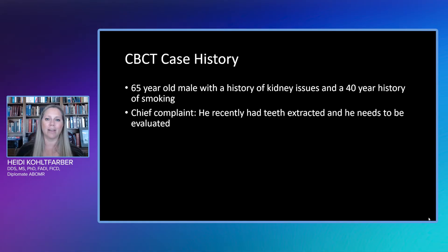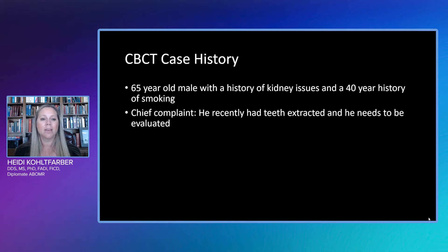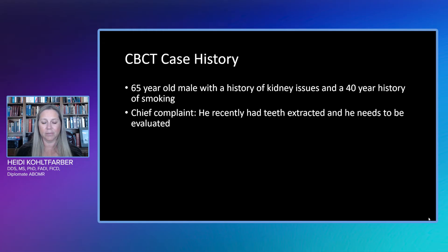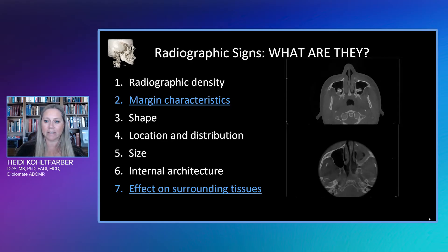Let's jump right in. This was the case history sent to us when the CBCT was submitted. This particular case is a 65-year-old male with a history of kidney issues and a 40-year history of smoking. His chief complaint is that he recently had teeth extracted and needs to be evaluated. With any of our CBCTs when we find a lesion, we're going to go through our radiographic signs.